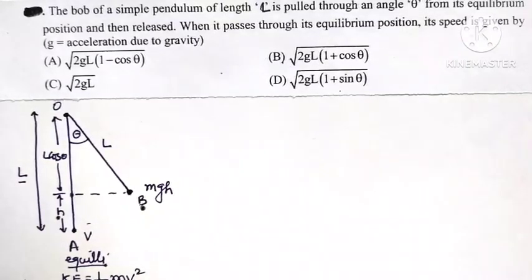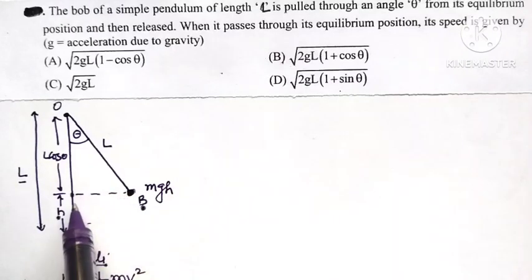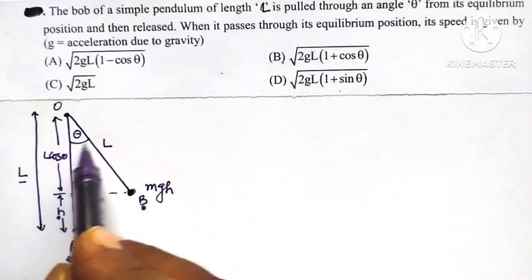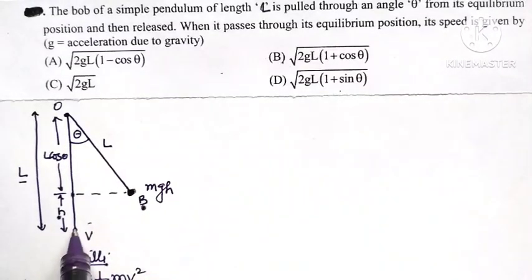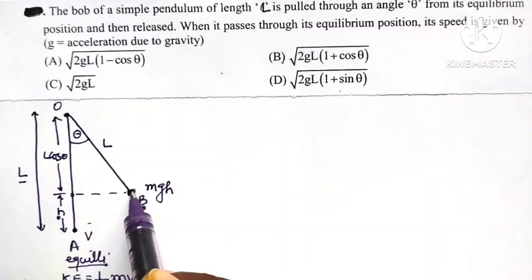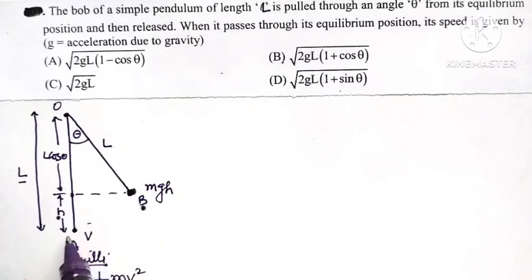According to the law of conservation of energy, when the bob moves from B to A, the potential energy gained by the bob decreases and gets converted into kinetic energy. Loss in potential energy equals gain in kinetic energy.